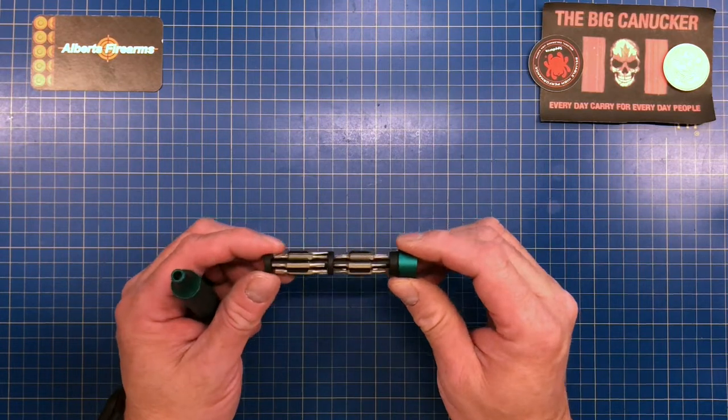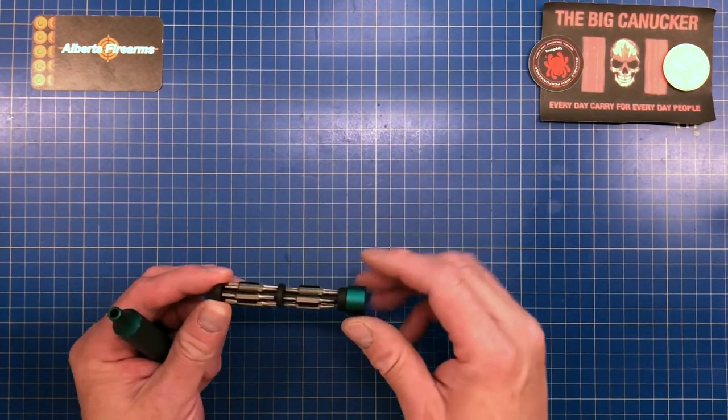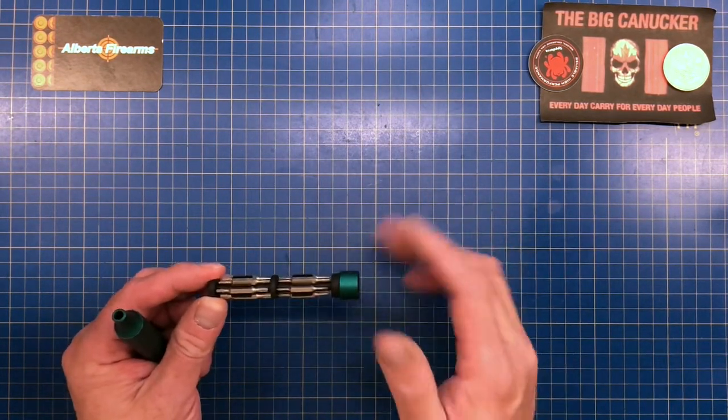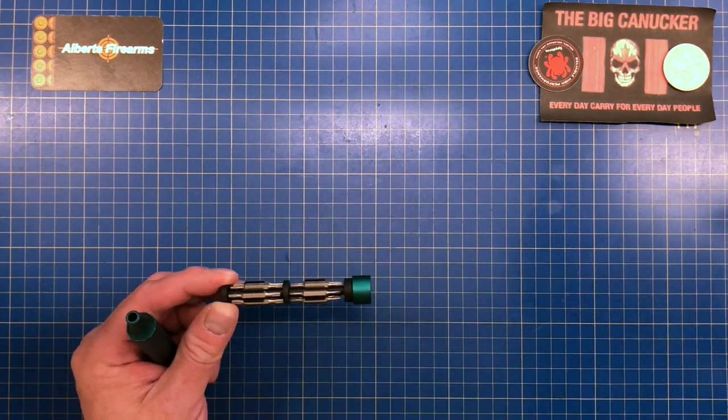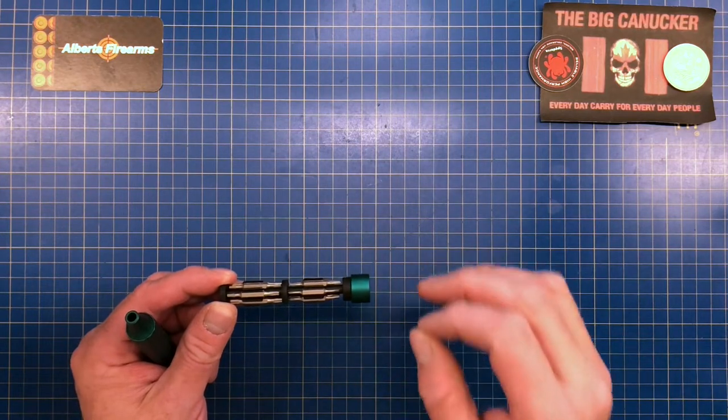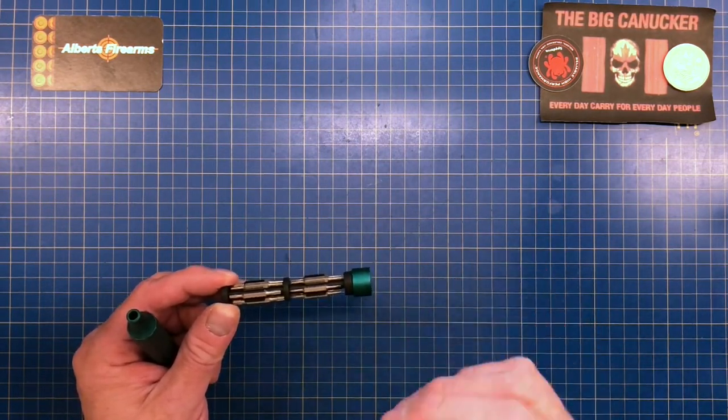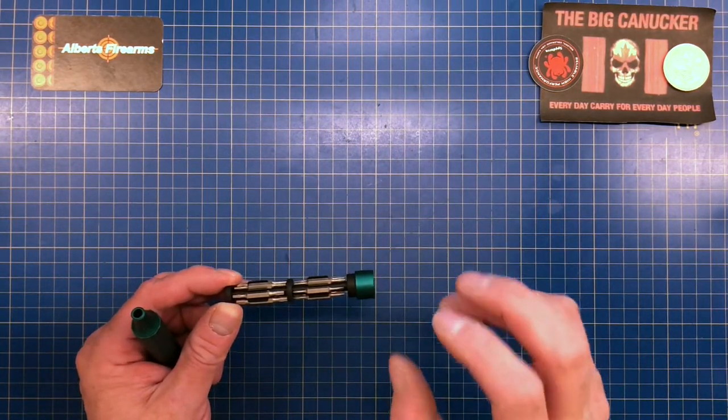The bits themselves are an S2 bit, so they're not like a cheap butter knife steel that's going to strip out. I'm not saying they're indestructible because they are a precision set, but S2 tool steel is a really, really good quality steel to use in your bits.